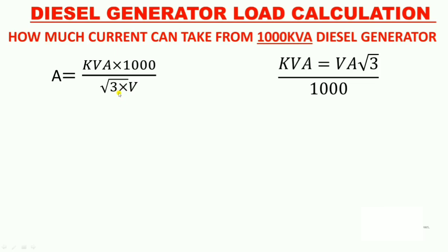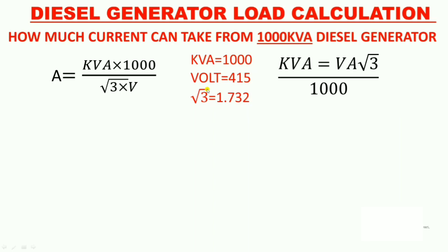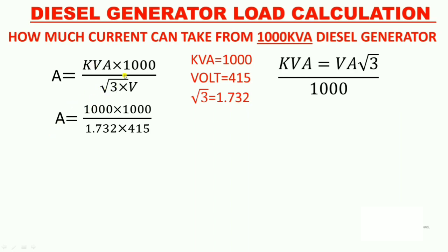Now let us start the calculation. First understand which values to put into this formula. kVA is equal to 1000, and the voltage generated by the diesel generator is 415 volts, and the √3 value is 1.732. Now put those values into the formula: Ampere = (kVA × 1000) / (√3 × V) = (1000 × 1000) / (1.732 × 415).